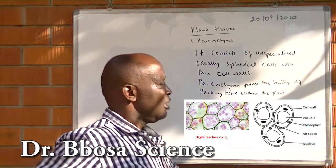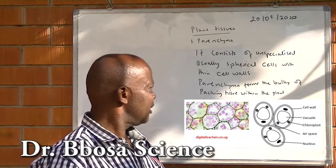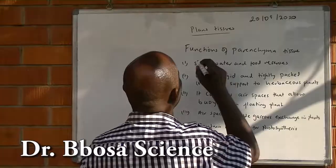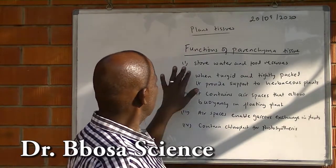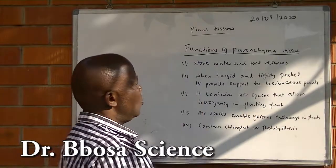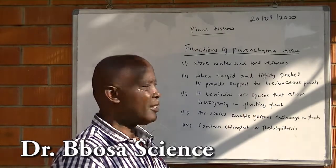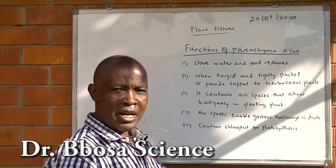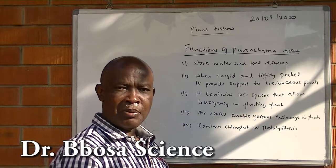One: parenchyma consists of unspecialized, usually spherical cells with thin cell walls. It forms the bulk packing tissue within the plant. Functions of parenchyma tissues: one, parenchyma tissues store water and food reserves. Two, when turgid and tightly packed, they provide support to herbaceous plants. Three, it contains air spaces that allow buoyancy in floating plants. Four, it contains chloroplasts for photosynthesis, especially in leaves.